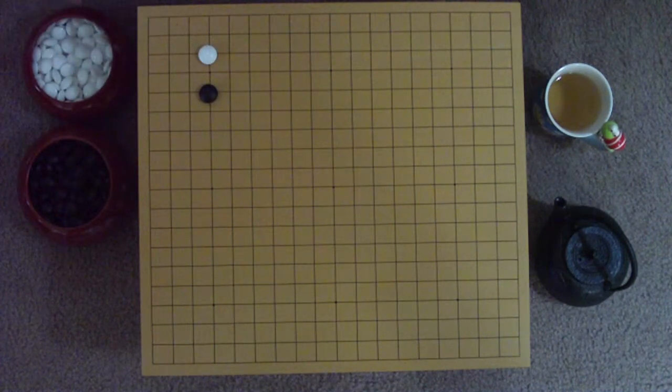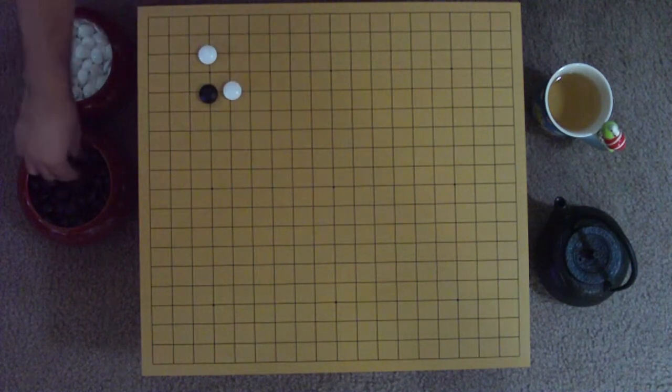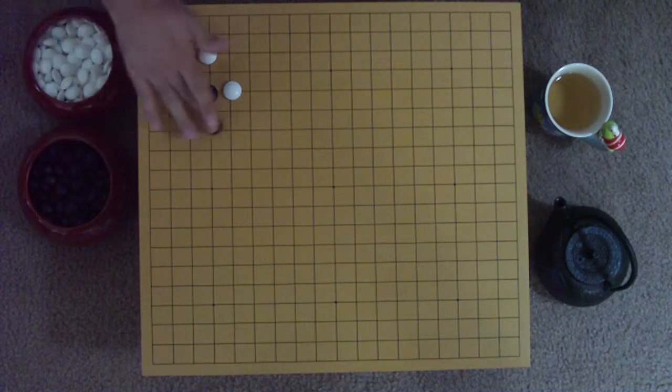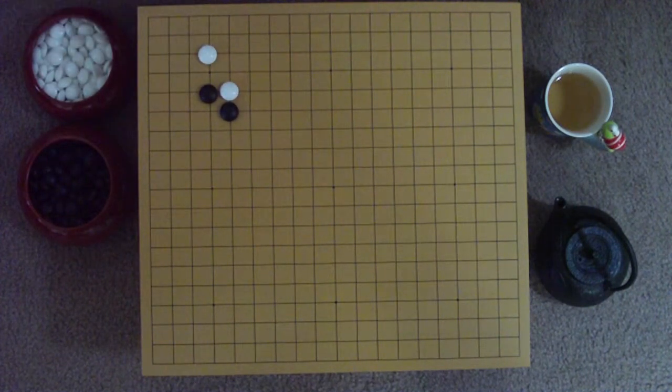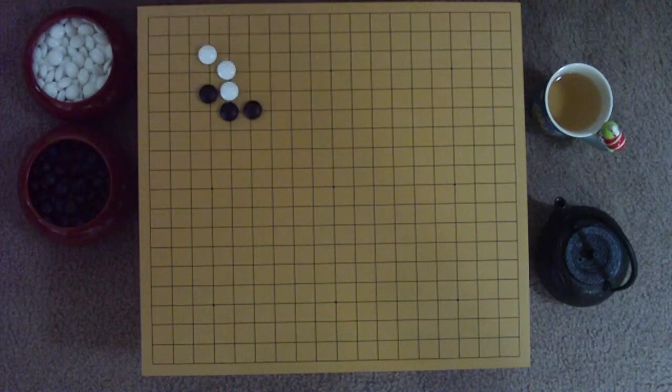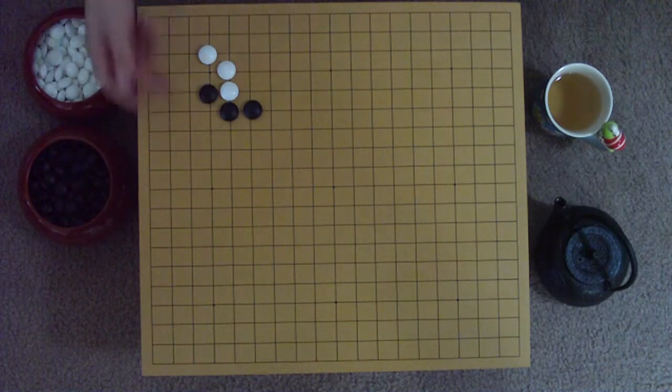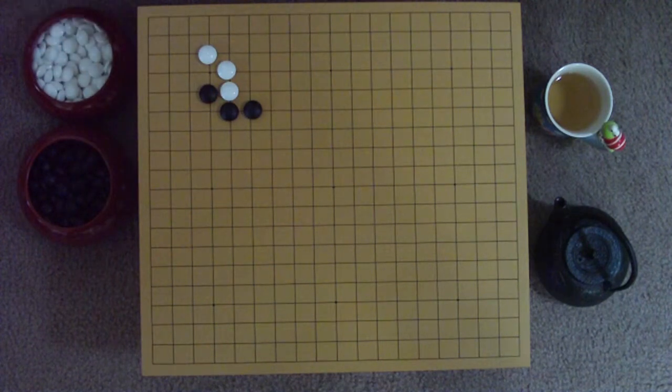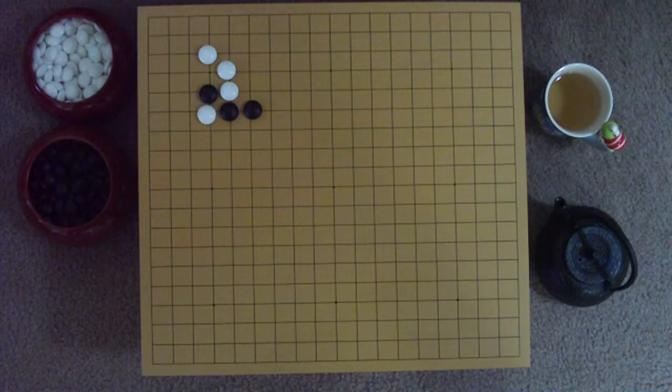If Black is hesitant to give White so much territory along the bottom, then she can extend an iron pillar shape instead of a tiger's mouth. This opens a tempting cutting point that might lure White to emphasize the right side instead of the bottom.